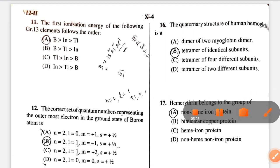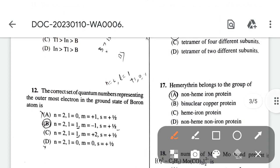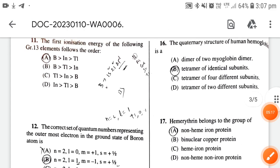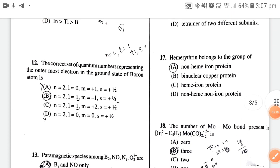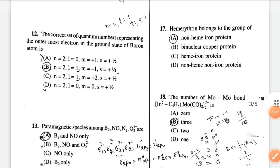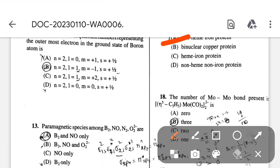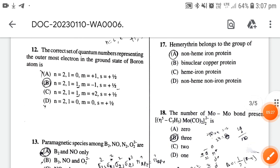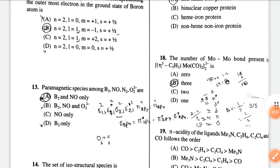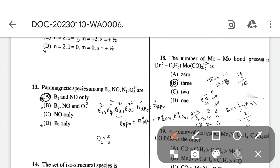Question 16: the quaternary structure of human hemoglobin is a tetramer of identical subunits. Question 17: hemosiderin belongs to the group of non-heme iron protein. Question 18: the number of Mo-Mo bonds present in this complex is three, option B.